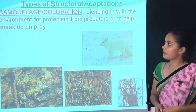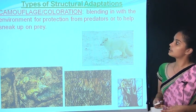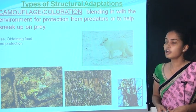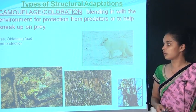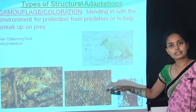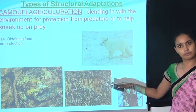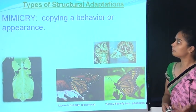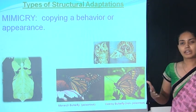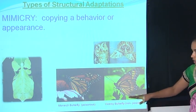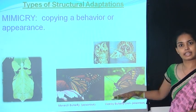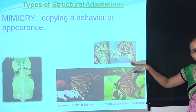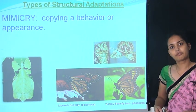Types of structural adaptation — colouration: blending in with the environment for protection from predators or to sneak up on prey. For example, the lion has colouration similar to the grassland in which it lives, so it can hunt properly. Mimicry is copying a behaviour or appearance. Many poisonous butterflies mimic non-poisonous ones, and a butterfly may mimic an owl to escape its enemies.